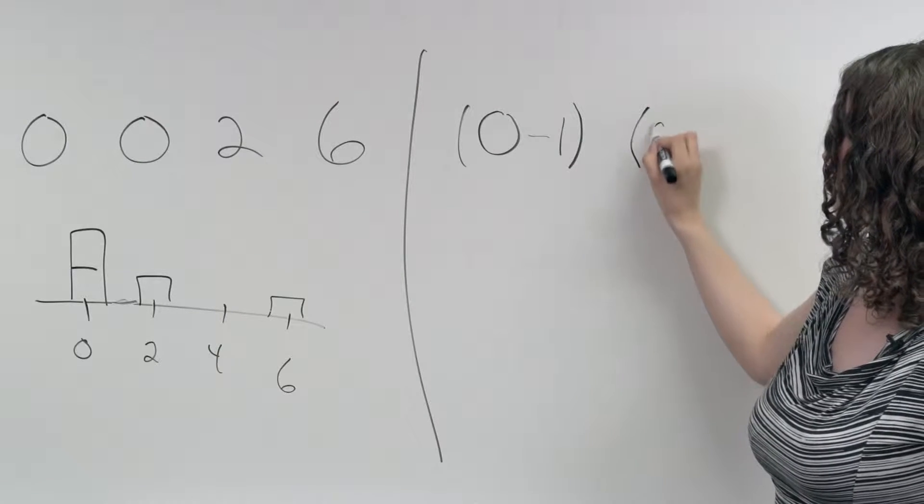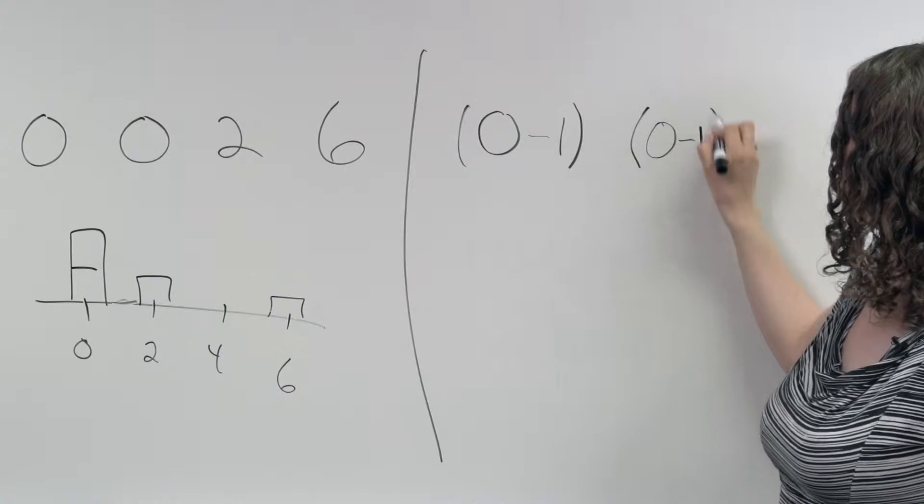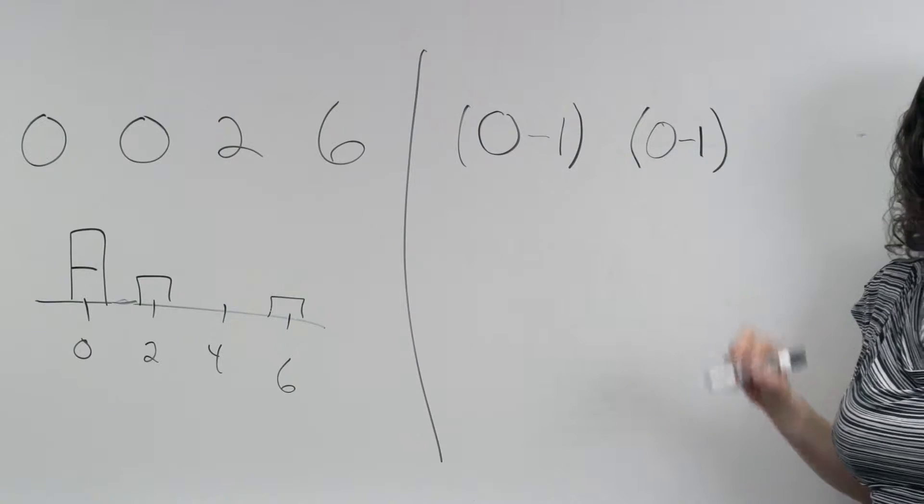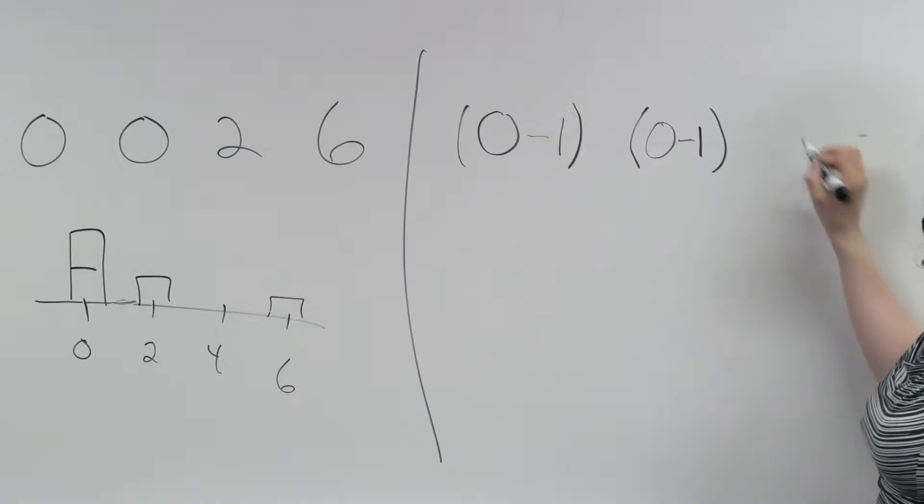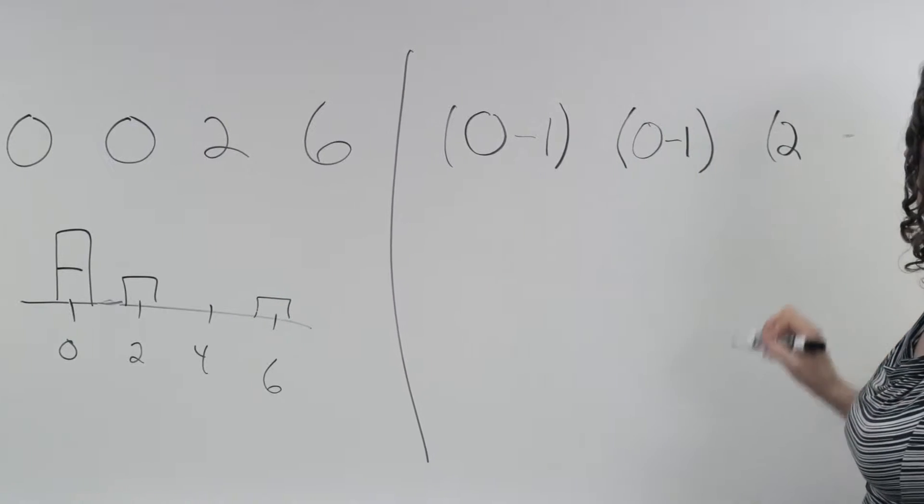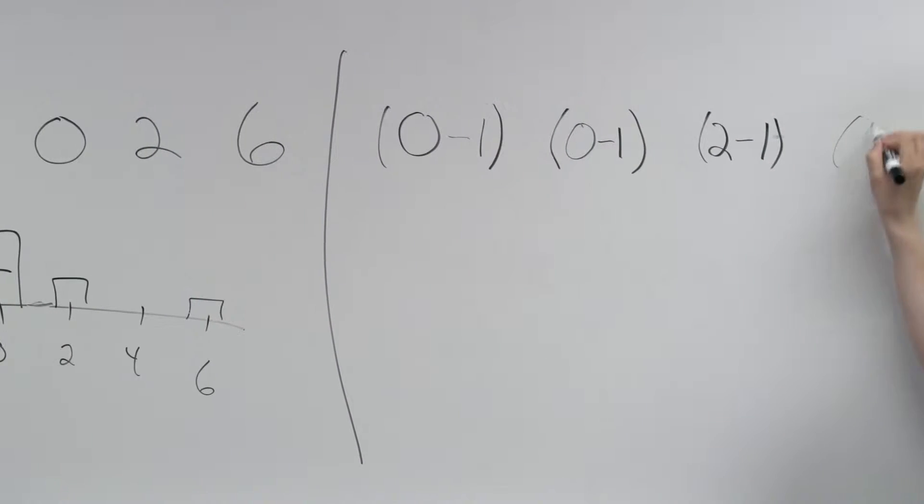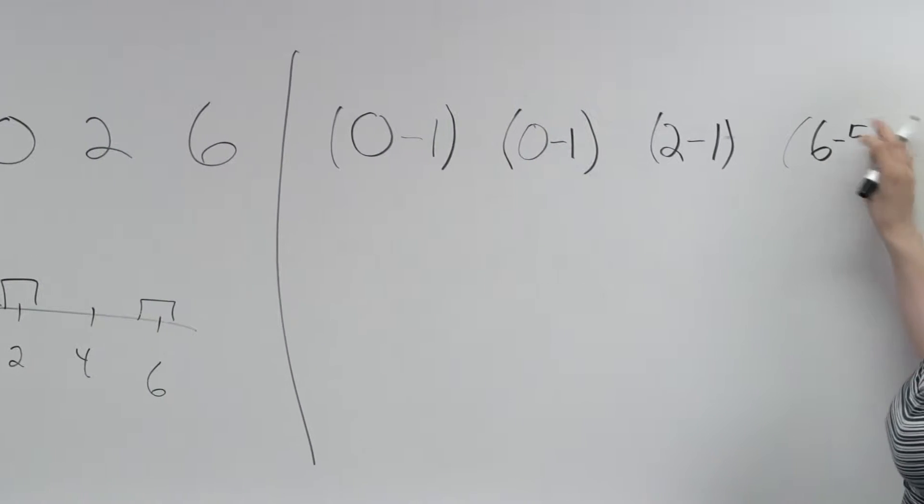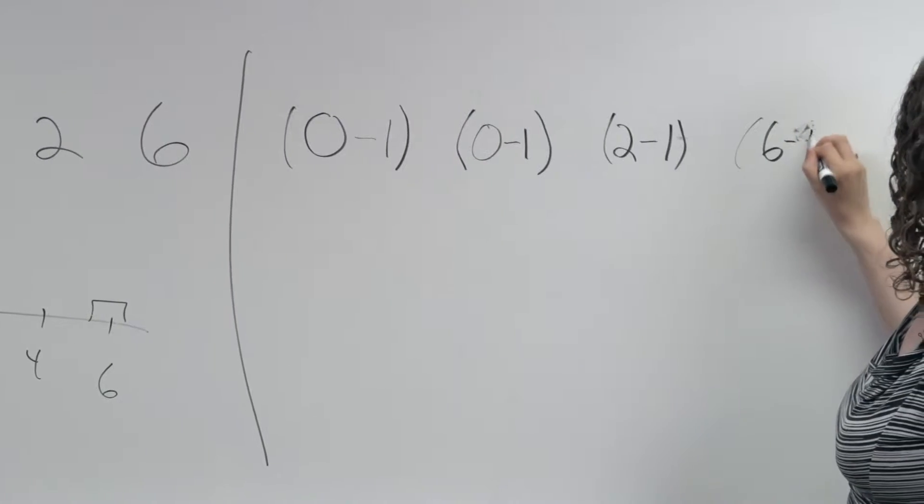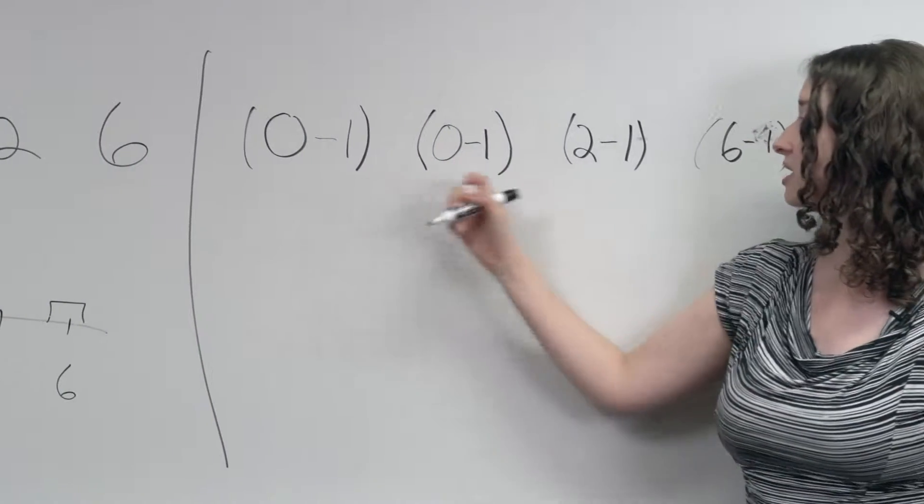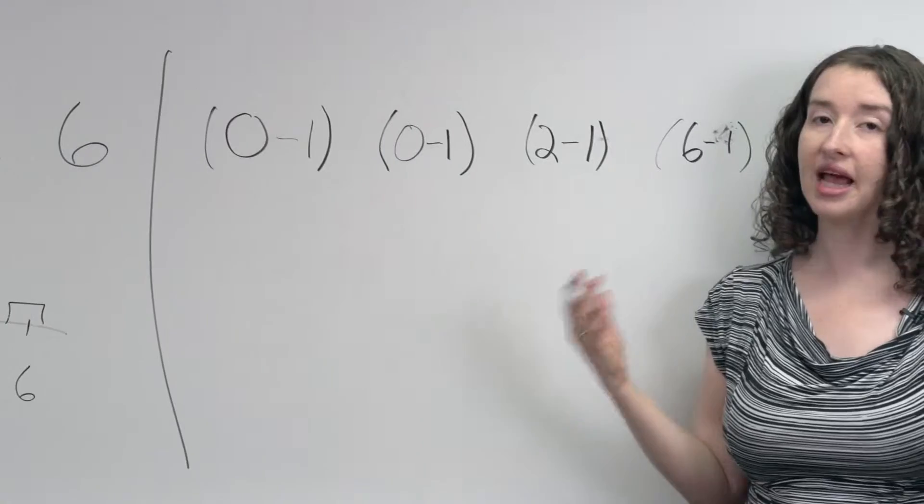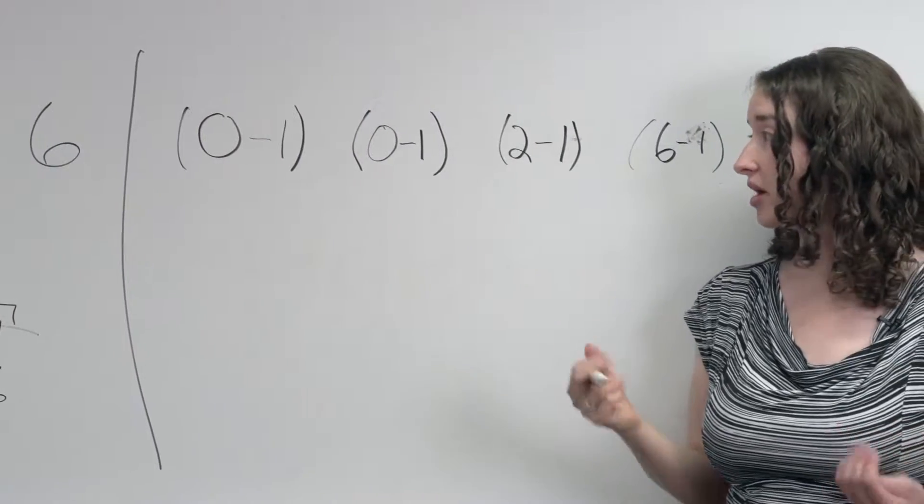Second student, same thing. She had zero previous courses so she is zero minus one in terms of her difference from the median. Third student had two previous courses so she's one away from the median and this student had six previous courses so she is five away from the median. So these four differences represent how far each of my data points is from the median.